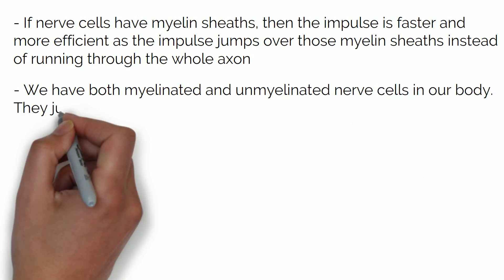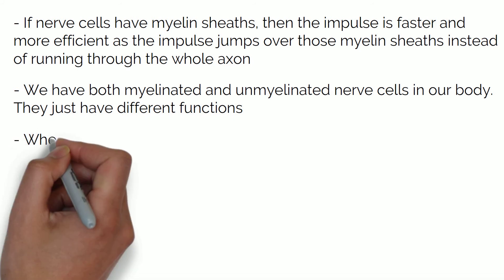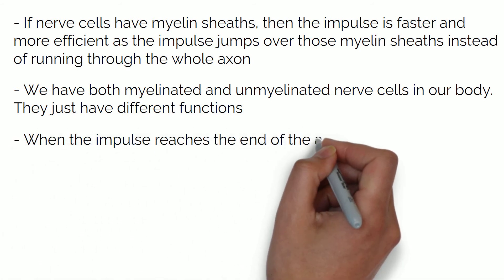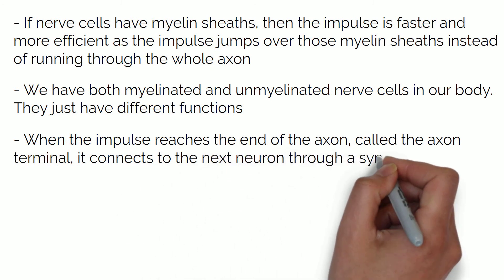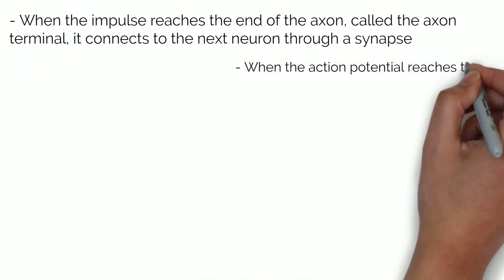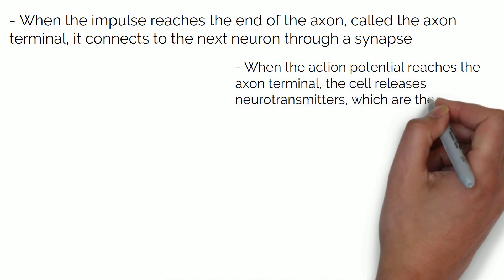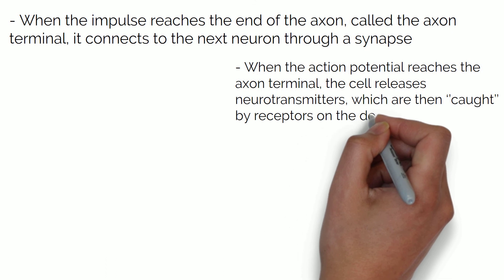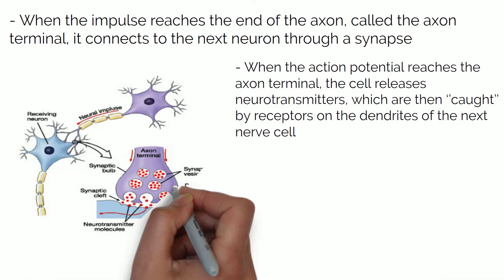When the impulse reaches the end of the axon called the axon terminal, it connects to the next neuron through a synapse. So when the action potential reaches the axon terminal, it makes the cell release neurotransmitters, which are then caught by receptors on the dendrites of the next nerve cell.